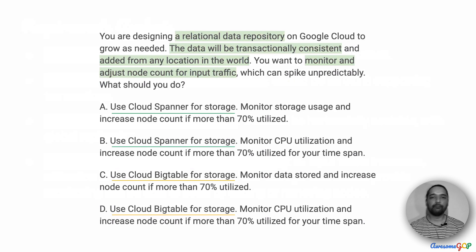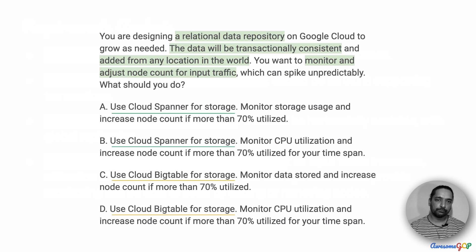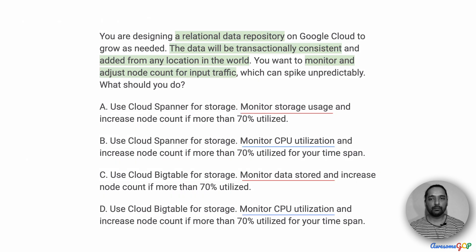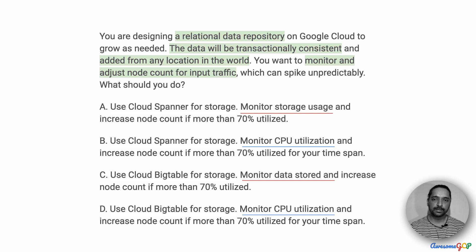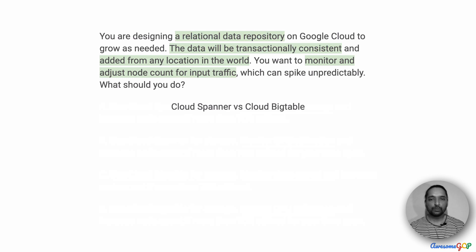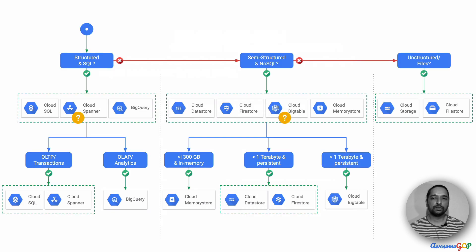These options have sets or groups of sub-options within them. The first decision is on storage: do we want to use Cloud Spanner or do we want to use Cloud Bigtable? The second part is whether we should be monitoring storage and increasing the node count based on it, or whether we should be monitoring CPU utilization and increasing the node count based on how that progresses. If we can eliminate one of these, it becomes easy. Let's first look at the storage options — should we be using Cloud Spanner or Cloud Bigtable?